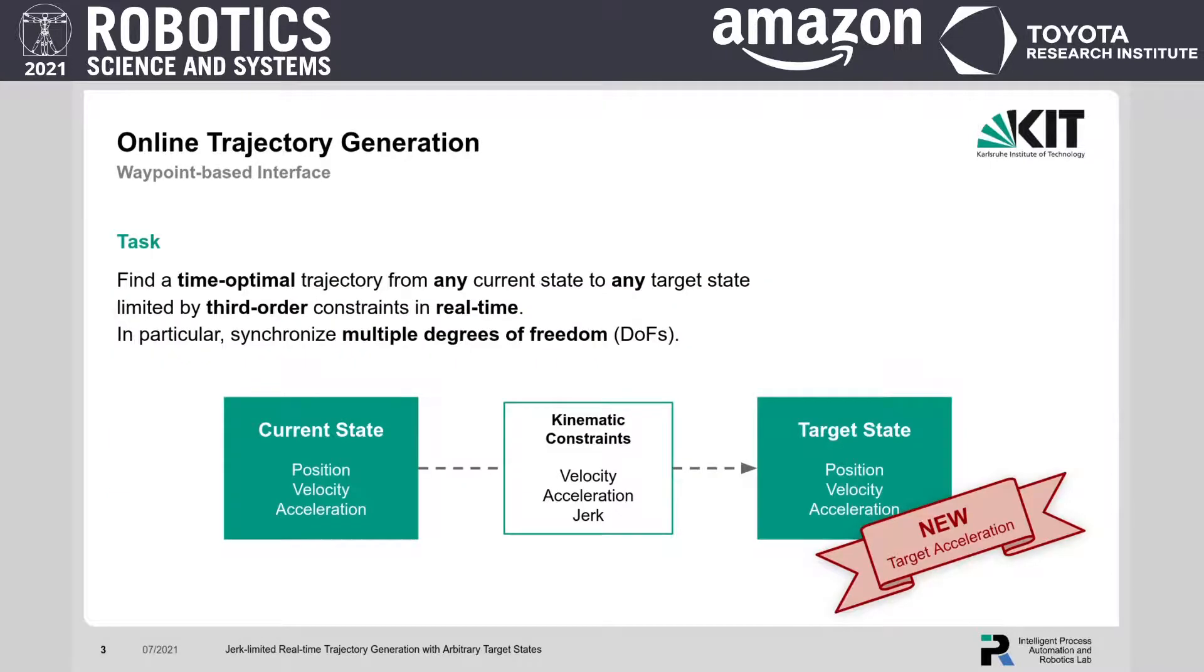A common interface between high-level motion planning and trajectory generation is waypoint-based. So the task is to calculate a time-optimal trajectory from any state to an arbitrary target state, both defined by position, velocity and acceleration, limited by velocity, acceleration and jerk constraints.